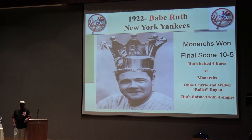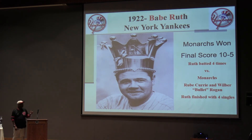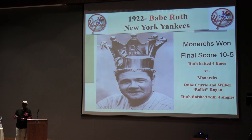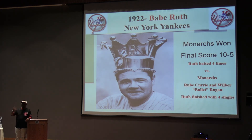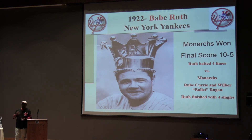People often ask me, did Babe Ruth ever play against any of the black teams? He did, quite a few times. In 1922 he came to Kansas City and played against the Kansas City Monarchs. He had four hits that day — all singles. But then he decided he wanted to pitch, and one of the Kansas City Monarchs players, Oscar 'Heavy' Johnson out of Atchison, Kansas, hit a home run off of Babe Ruth. And just to prove it wasn't a fluke, Carl Mays came in the next week — Carl Mays was the pitcher known for the only time a player ever got killed by being hit by a pitch. Oscar Johnson hit one off of Carl Mays the next week too.